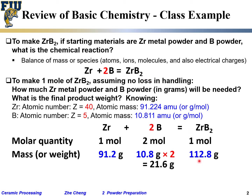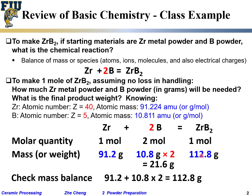We call it 'formula weight' for a crystal compound, or 'molecular weight' for small molecules. Check the math: 91.2 + (10.8 × 2) = 112.8. You can verify the formula weight of zirconium diboride on a reference website — it should match this number. This kind of stoichiometry calculation is important whenever you do any synthesis.